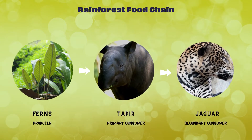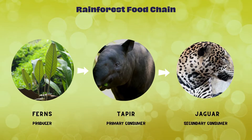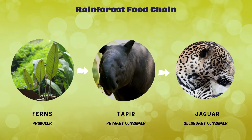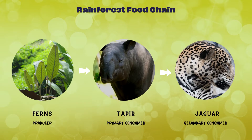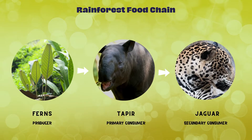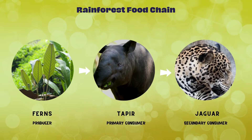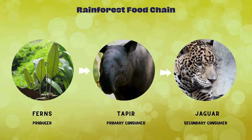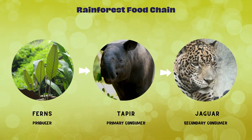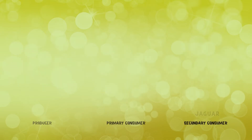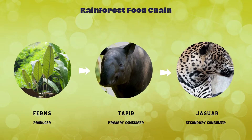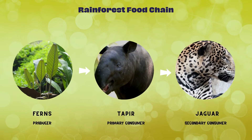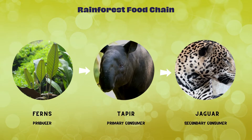Here's another rainforest food chain. It starts from ferns. Ferns are the producers in the food chain. Tapir is a herbivore that eats ferns, making it the primary consumer. Jaguar is a carnivore that consumes the tapir, making it the secondary consumer of the food chain.